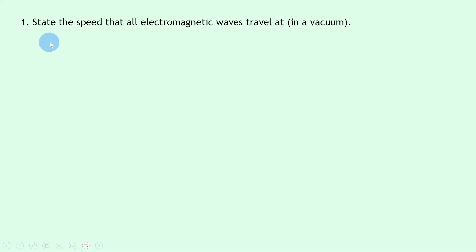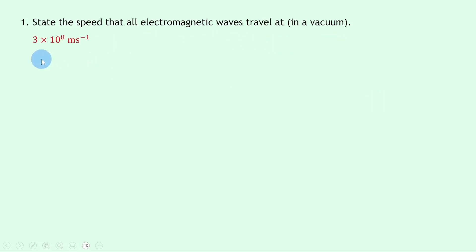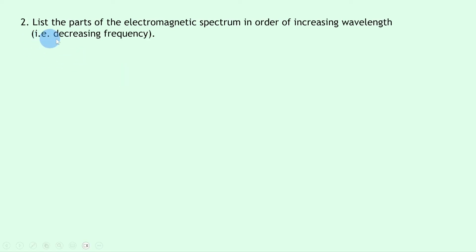Question one says: state the speed that all electromagnetic waves travel at in a vacuum. Well, remember this speed is the speed of light — 3 × 10⁸ meters per second — which you'll find on the data sheet in the exam.